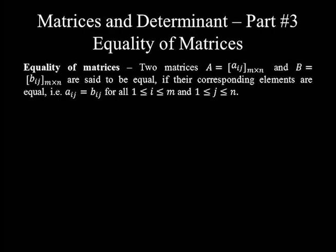As you know, the subscript i stands for row and j stands for column where a particular element is located. From this definition, A sub ij equal to B sub ij means two matrices are equal only when elements with identical subscripts are equal.